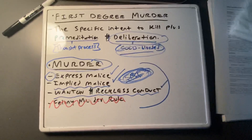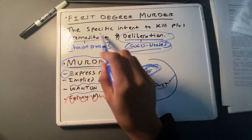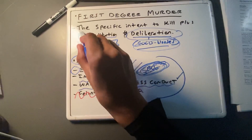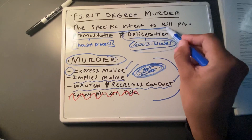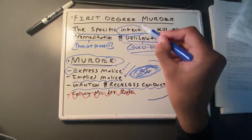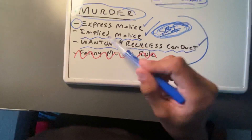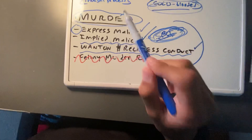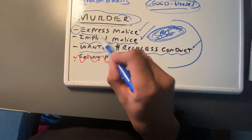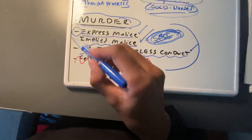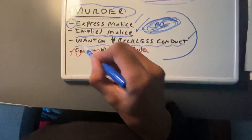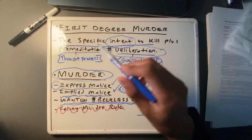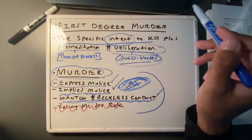In this case, the intent element — the first element of first-degree murder, the specific intent to kill — is already satisfied under murder, because we have implied malice, wanton and reckless conduct, and maybe express malice. We for sure have implied malice and wanton and reckless conduct. Therefore, the specific intent to kill is already satisfied.